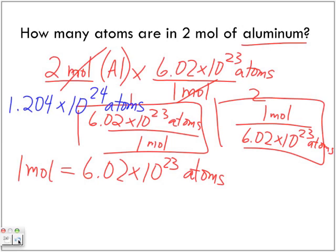In 2 moles of aluminum, we would have this many atoms. But what are the least number of significant digits in my question? One significant digit. So my answer is 1 × 10²⁴ atoms. Please make sure you remember significant digits.